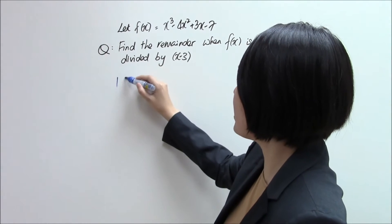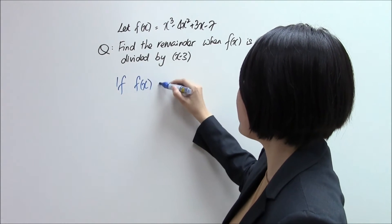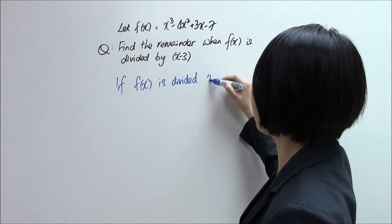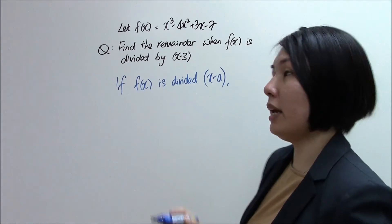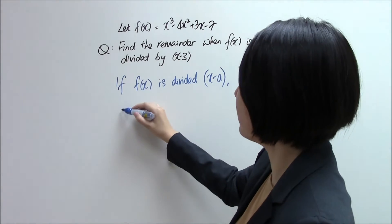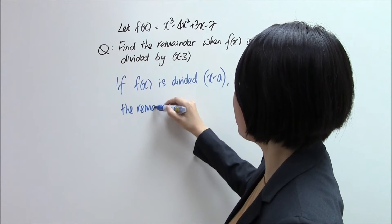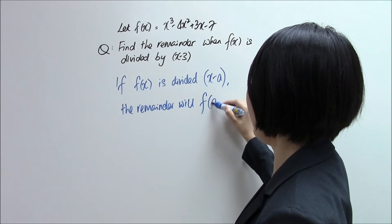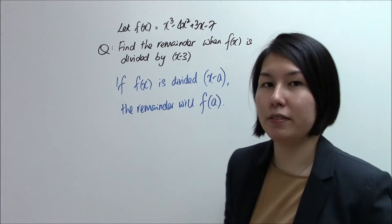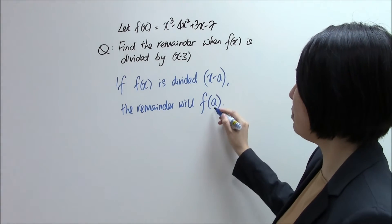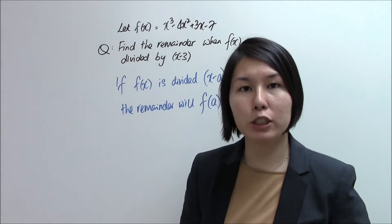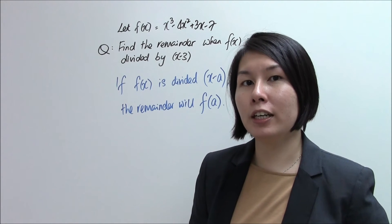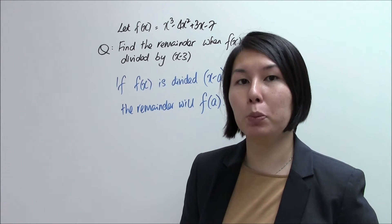The Remainder Theorem says: if f(x) is divided by x minus a, the remainder will be f(a). What this means is if you substitute the value of x to be a into your function and calculate it on your calculator, the value that you get will be the remainder.